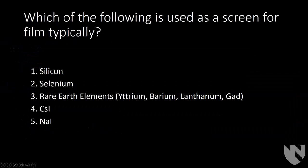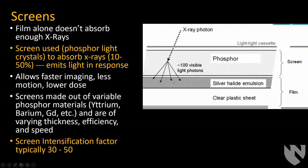First question: which material is used for screen film as a scintillator? Rare earth elements are typically used for the scintillators. The film by itself won't absorb enough x-rays — it's very thin and not efficient at converting x-ray energy into silver particles. X-ray photons converted into light are much more efficient at creating the image, so you don't need as much dose. The screens are made out of various materials, usually rare earth elements, varying in thickness, efficiency, and speed. The intensification factor of a screen is typically 30 to 50.